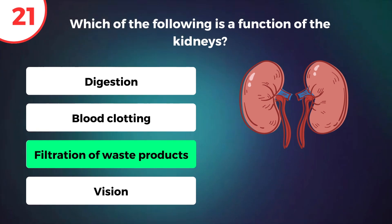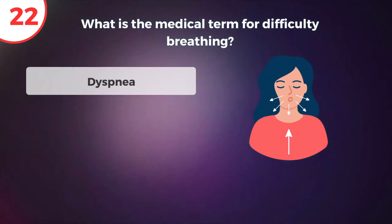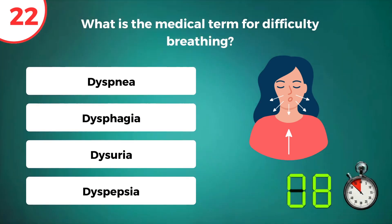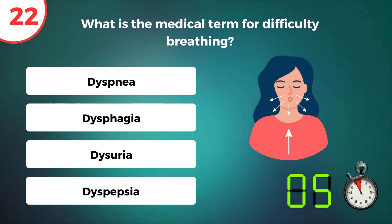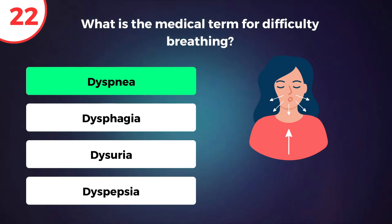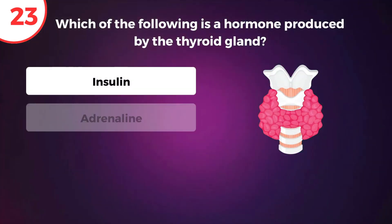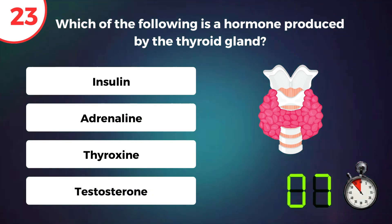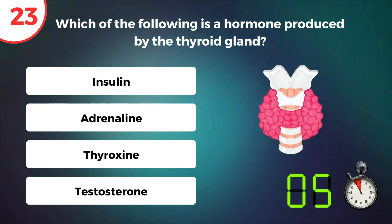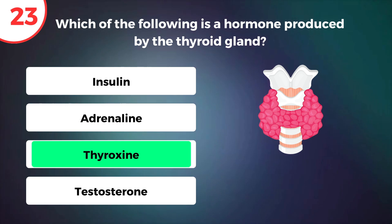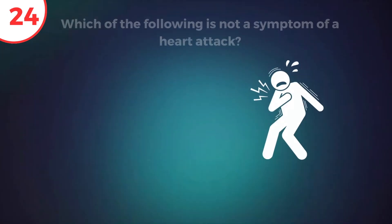Filtration of waste products. What is the medical term for difficulty breathing? Dyspnea. Which of the following is a hormone produced by the thyroid gland? Thyroxine.